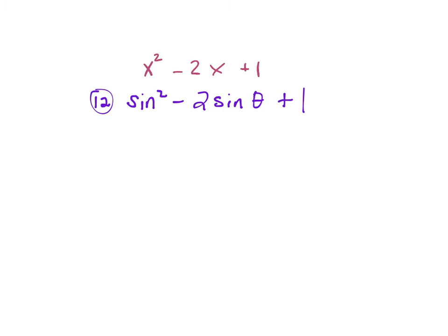We only have three terms, so we don't need to factor by grouping — we just factor it directly. Do we have two factors of 1 that add to negative 2? Would it be negative 2 and positive 1? What's negative 2 times positive 1? Negative 2.